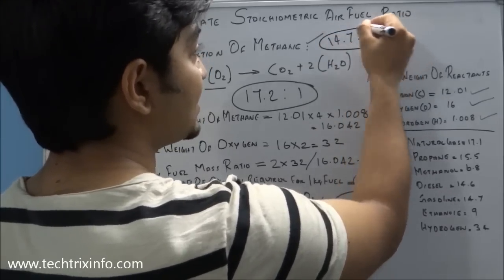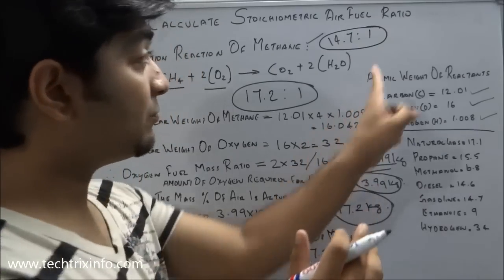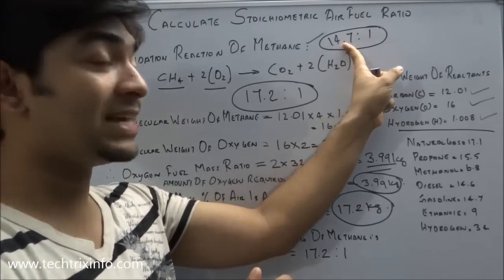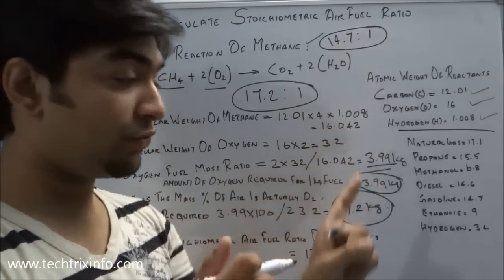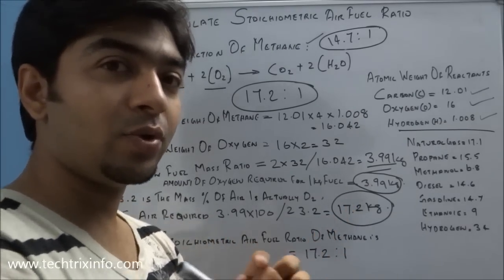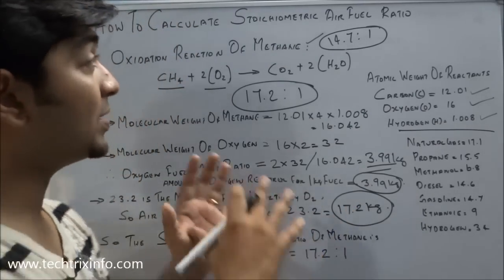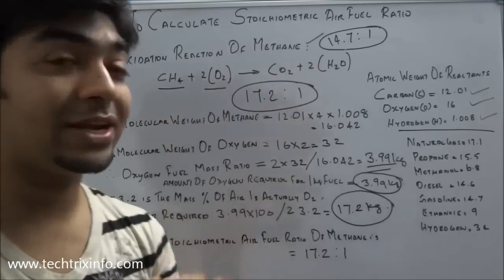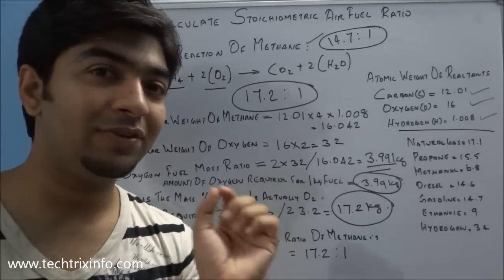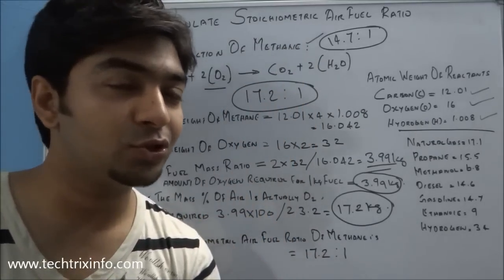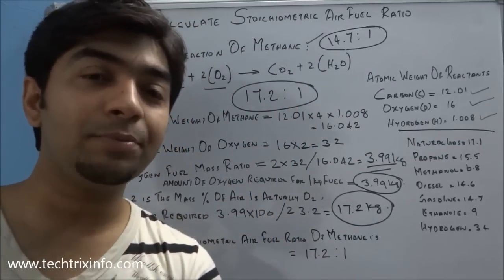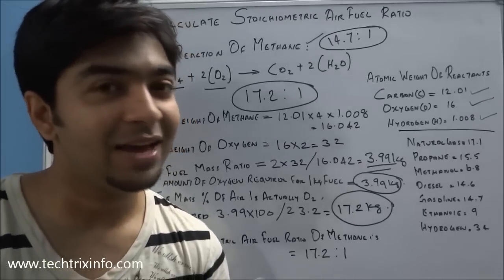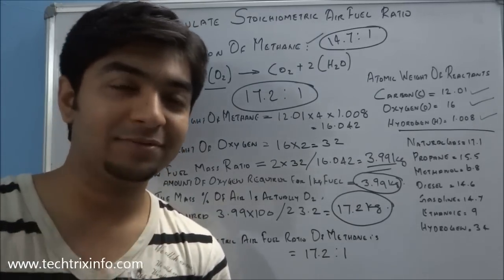So that confirms that for burning 1 kg of gasoline we need 14.7 kg of air exactly. I believe you now understand how to calculate the stoichiometric air-fuel ratio. If you liked this video, please click the like button or drop a comment. You can also subscribe by clicking the subscribe button. Great learning — best of luck!